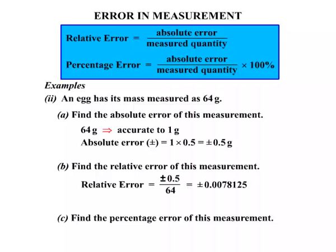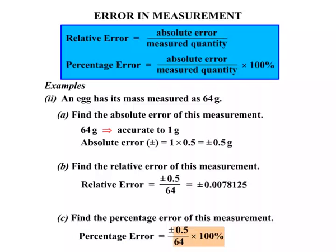For the percentage error, we take the relative error and multiply by 100% to change it to a percentage. That calculation gives us plus or minus 0.78125%.